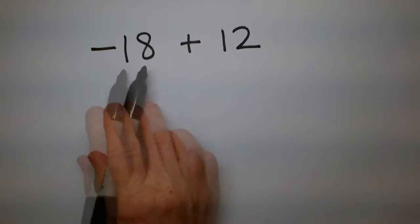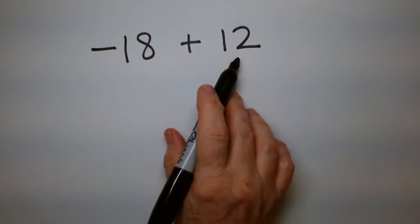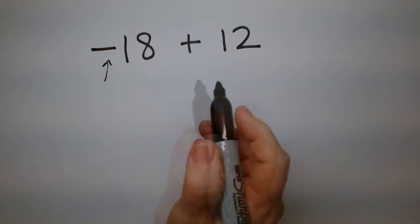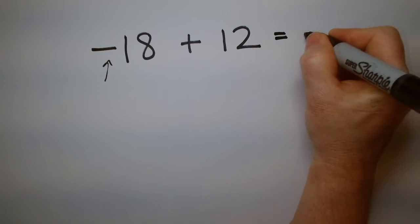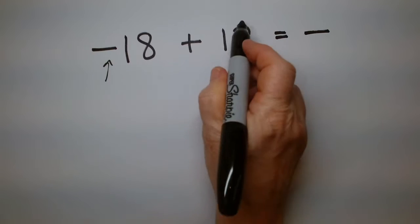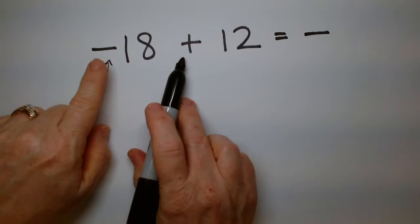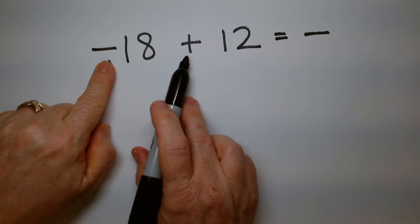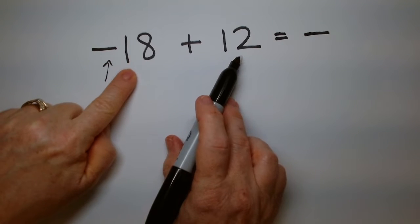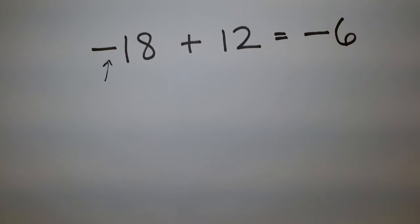Which number is larger? The 18 is bigger than the 12. So the 18 has the negative sign on it, so I already know my answer is going to be negative, because there's more negative than there is positive. When the two signs are different, we say: what's the difference between 18 and 12? That's going to be 6, so my answer is negative 6.